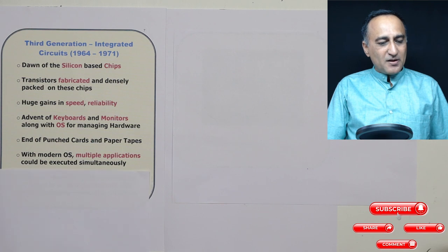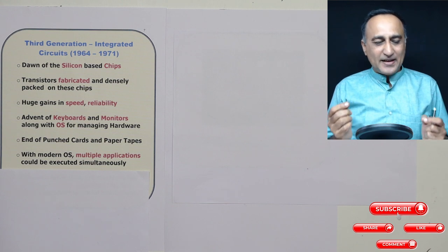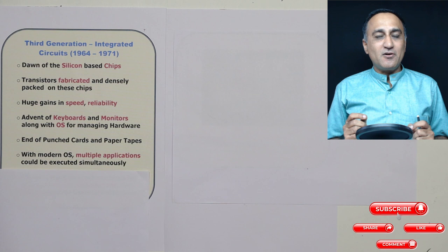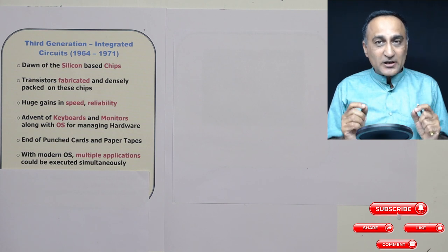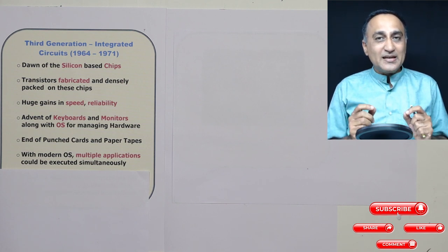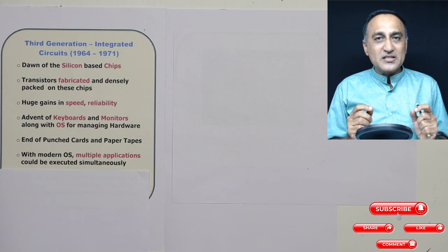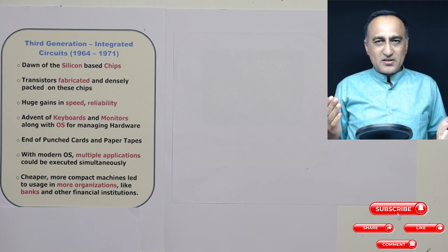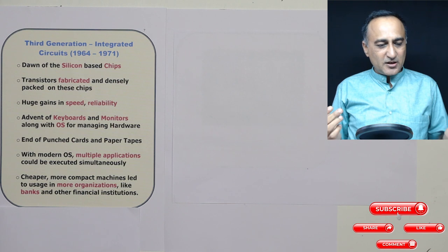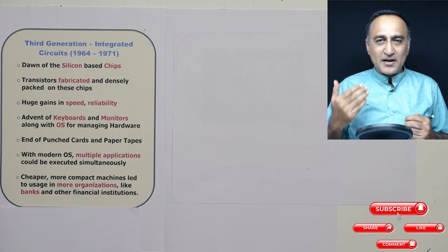Modern operating systems were introduced that could handle multiple tasks or multiple applications at the same time — maybe five users connected to the same computer doing different things simultaneously, with the computer managing all their requirements by splitting time between users. Because of ICs, machines became cheaper and more compact, and began to be adopted by more organizations like banks and financial institutions.